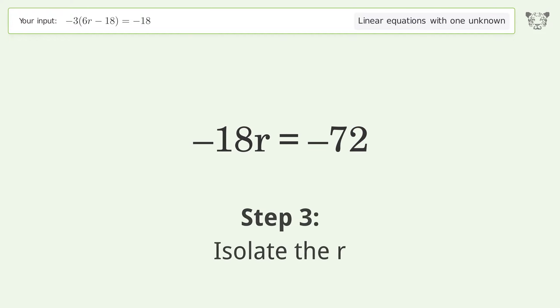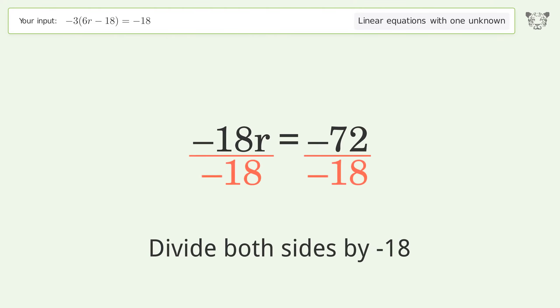Isolate the r. Divide both sides by negative 18. Cancel out the negatives.